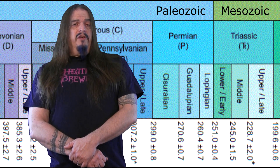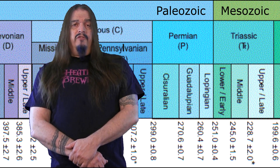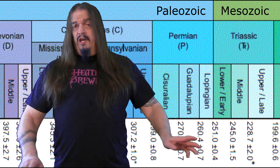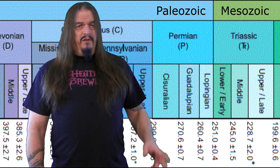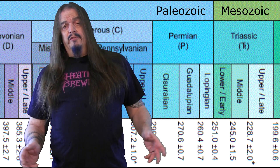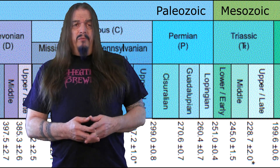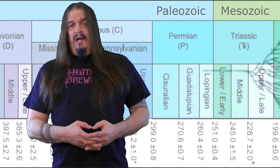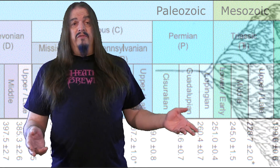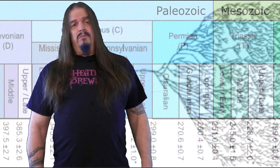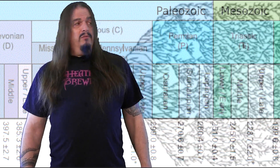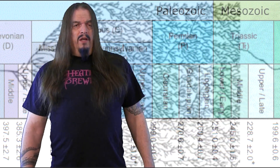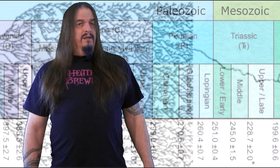Our last episode covered the mass extinction event which divides the Permian and Triassic periods. It was such an extreme event — the worst cataclysm in the history of the world — that it really divides the Paleozoic and Mesozoic eras. The Paleozoic began with the Cambrian explosion and saw the formation of many different categories of plants and animals that no one's ever seen alive, because 96 percent of species on land or at sea were wiped out. That's only one survivor for every couple dozen that died.